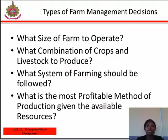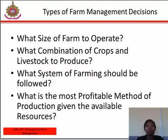The second problem is what combination of crops and livestock to produce. This will depend on whether the farmer wants to go into mixed farming or mixed cropping, as well as the value system of the area. The third is what system of farming should be followed. The available systems of farming include monocropping, mixed cropping, and mixed farming, while for animal rearing we have intensive, semi-intensive, and extensive farming.